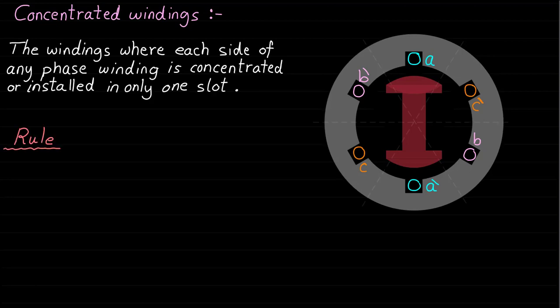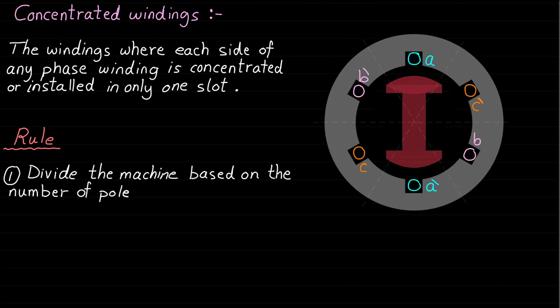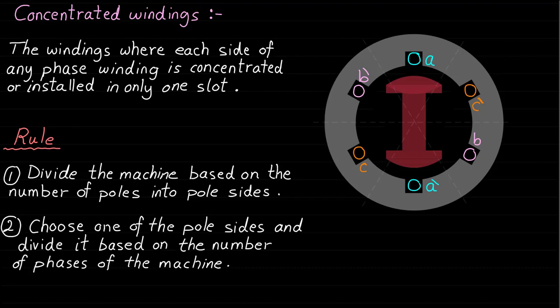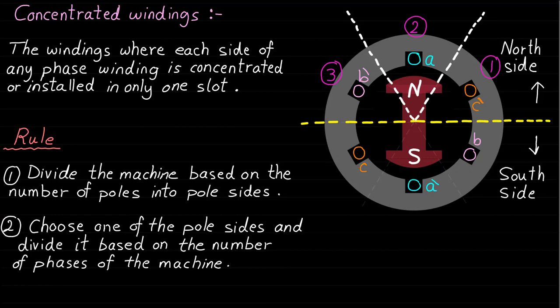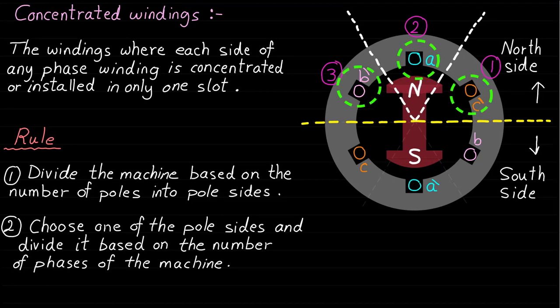The general rule to prove this definition is as follows. First, divide the machine based on the number of poles into pole sides. Second, choose one of the pole sides and divide it based on the number of phases of the machine. Let's apply this rule to this two-pole three-phase synchronous machine. Since this machine is a two-pole machine, we divide it into two sides: north side and south side. Then focus on one pole side and divide it into three parts based on the number of phases. As we can see, the north pole side is facing the coil sides of the three phases A, C-, and B-.